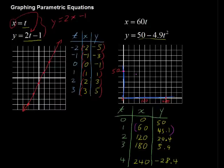Then we have 120, 30.4. That's about here. And then we have 180, 5.9. 180 would be right about here and then 5.9 is way down here.